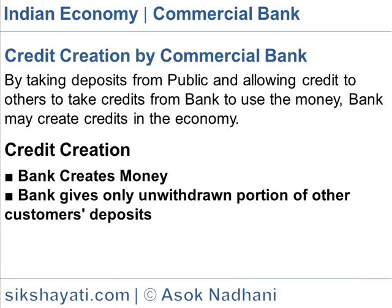Bank X can lend out the balance of Rs.900 to buy securities of Rs.900. The Rs.900 lent out or invested by bank X must finally be received by some persons and they may deposit it somewhere else, say another bank Y.